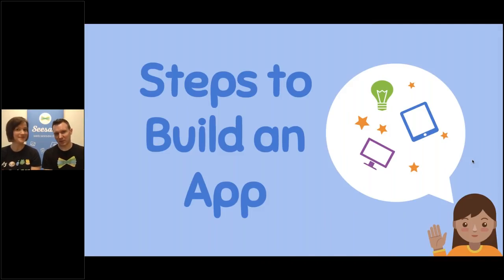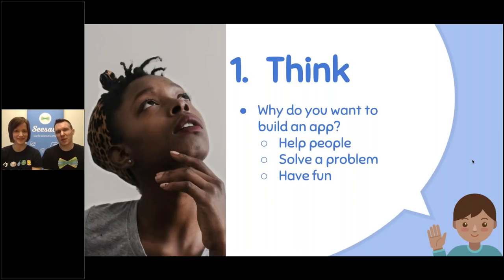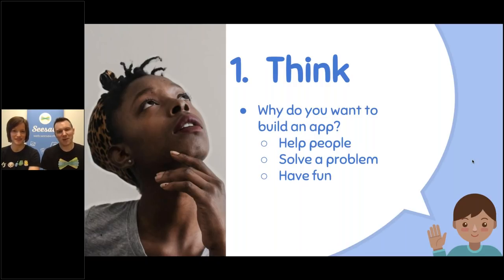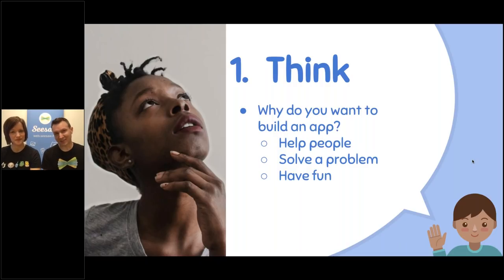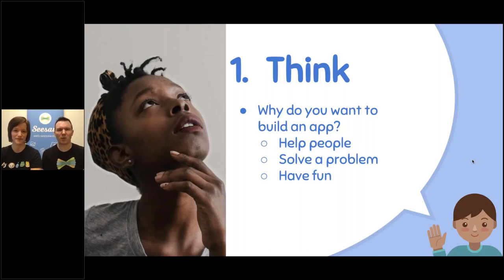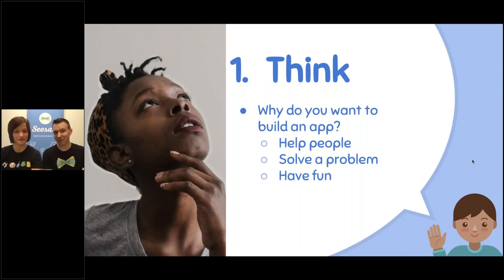Let's talk about the steps — we're going to go through five steps. The first step is to think about what you even want to do with this app. Here are a couple of examples: if you want to make a game so people can have fun, that's one kind of app. Sometimes you want to build a different kind of app that's about helping people solve a problem, like a calculator to help people solve math problems. That's a different kind of app.